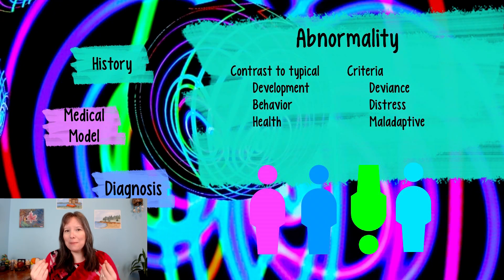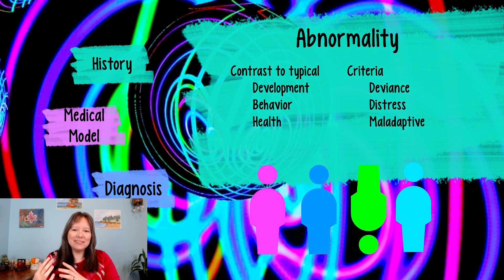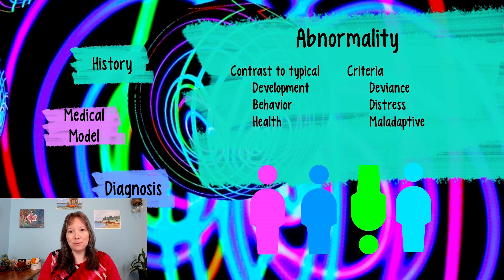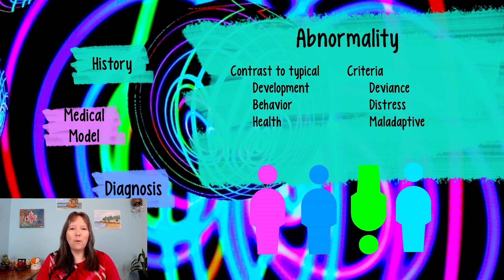When we're looking at abnormality in abnormal psychology, what does this mean? We spent a lot of time in this course discussing what's typical in terms of motivations, development, and personality. Abnormal psych or clinical psych is really a contrast to the typical — something atypical in terms of our development, behavior, or health status. Clinical psychology refers to things that are a bit more unusual or atypical.